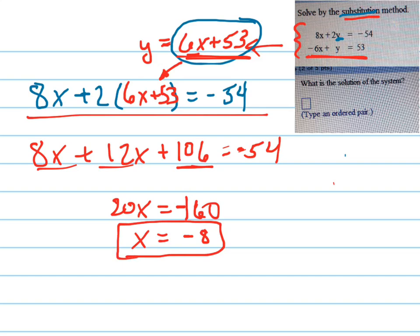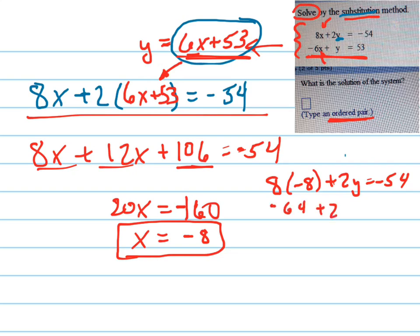That's my answer for x. I'm not done, because I've only found one half of the solution, not the entire solution. Notice that the solution needs to be an ordered pair. So I'm now going to plug negative 8 back in to either one of these equations — either one will work. I'll go ahead and do the top one. So there's my equation — equals negative 64 plus 2y equals negative 54.